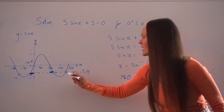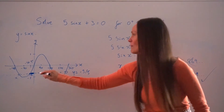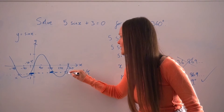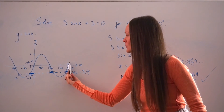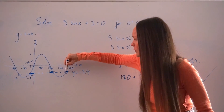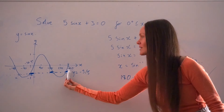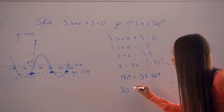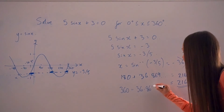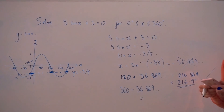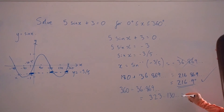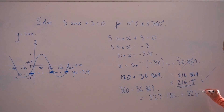This second intersection point can be found in a similar way. Remember this distance is 36.9 degrees, and also the distance at the end between the line x equals 360 and our intersection point is also 36.9 degrees. So because it's 36.9 degrees before 360, this time I subtract 36.869 from 360. That gives 323.130 and so on, so to one decimal place that's 323.1 degrees.